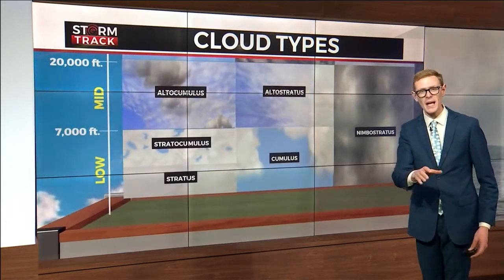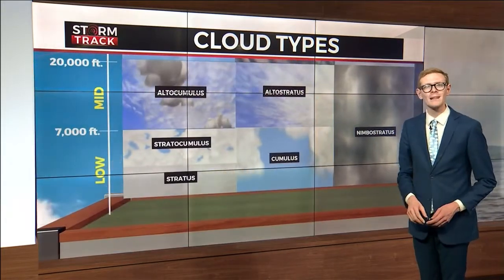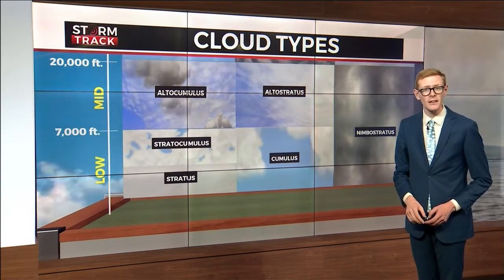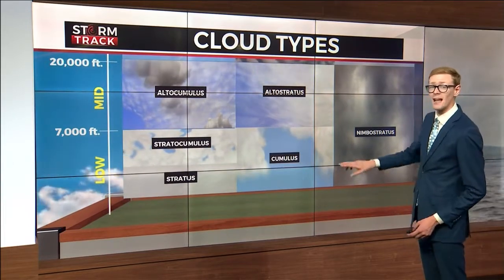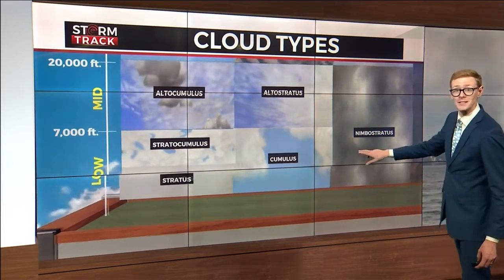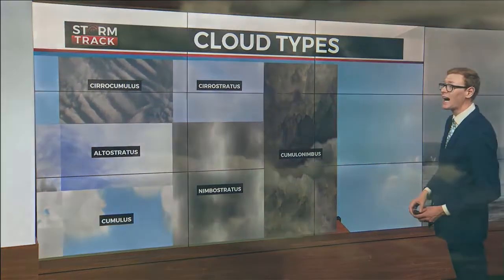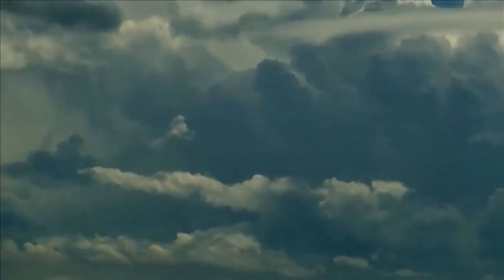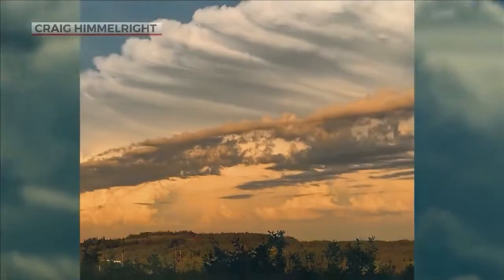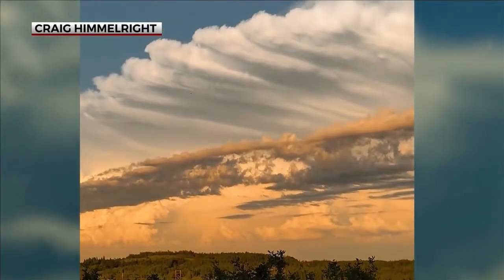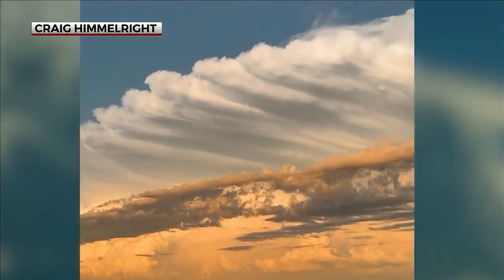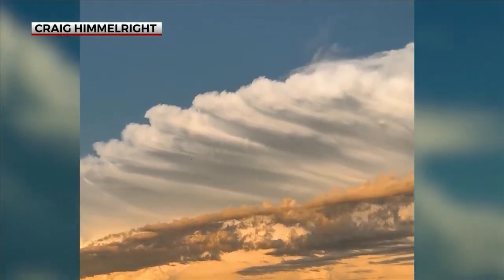Nimbostratus is a gray uniform rain cloud that can be tall enough to extend into both low and mid levels. But a cumulonimbus — that is a thunderstorm cloud — can begin at low levels and reach high into the atmosphere. Cumulonimbus clouds can only rise until they hit the tropopause, then the top flattens like an anvil.